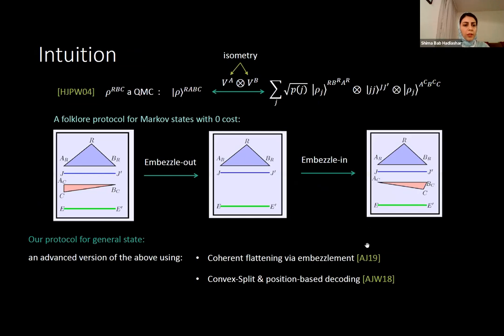Let me briefly explain the high-level idea of our protocol using the folklore zero-cost protocol for Markov states. If rho_RBC is a quantum Markov state, its purification can be transformed to a specific form through local operations where, conditioned on registers J and J prime, registers are decoupled.